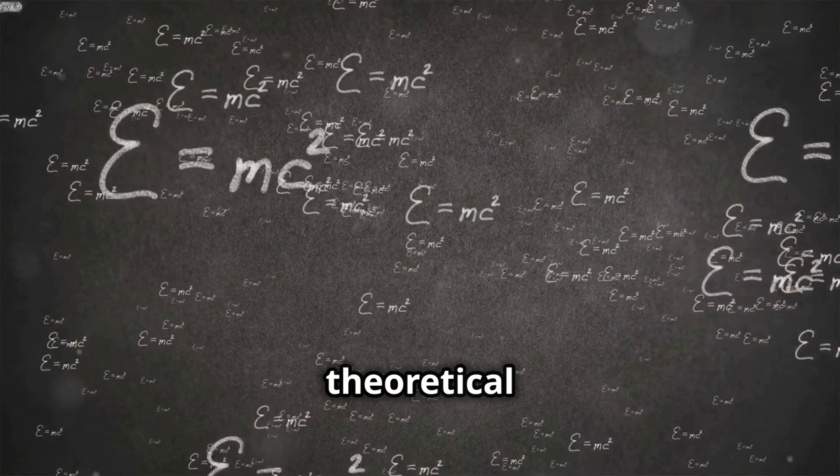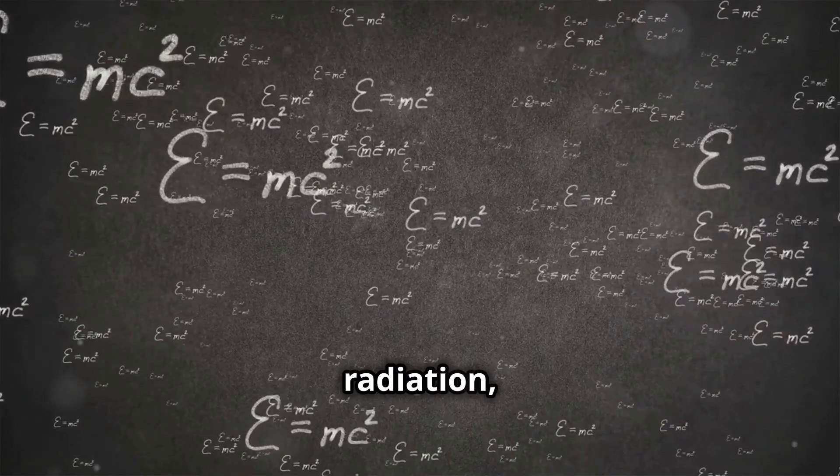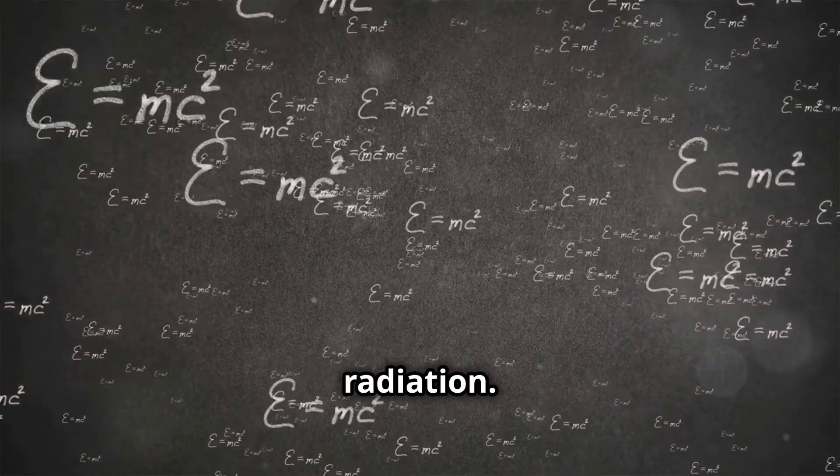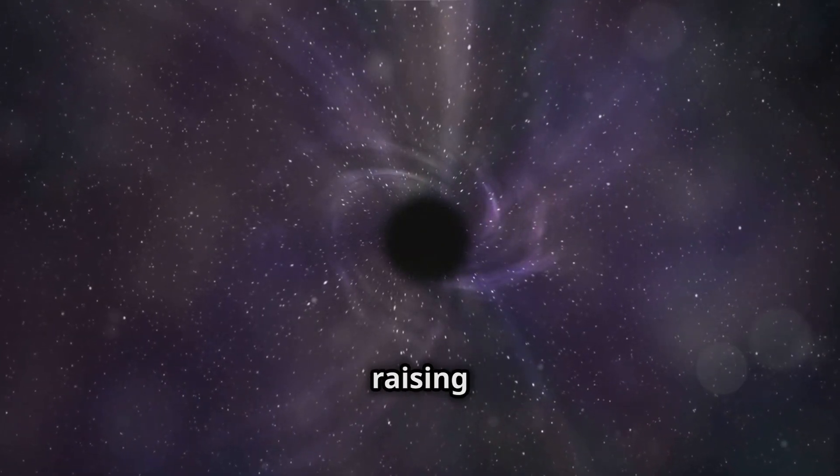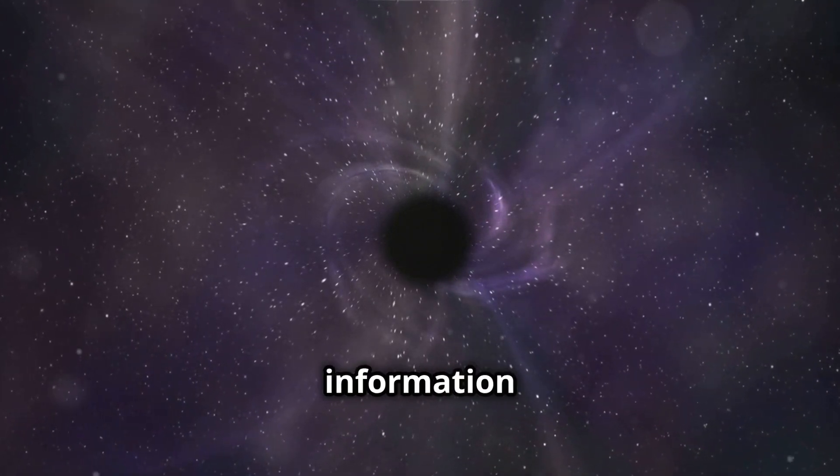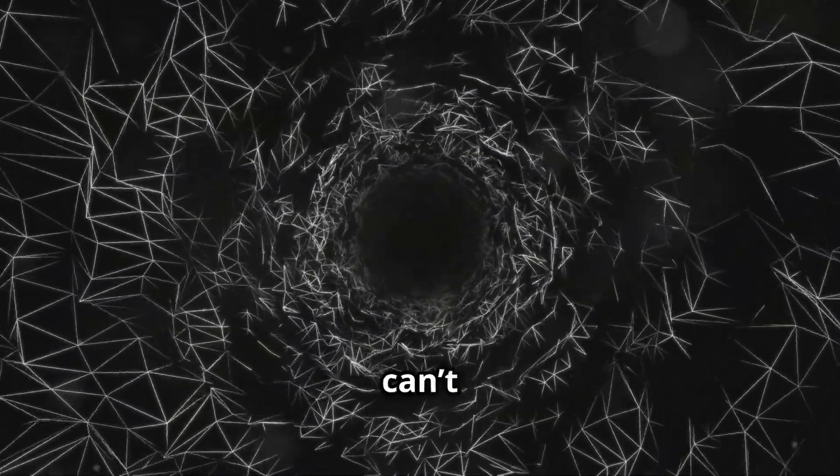In the 1970s, theoretical physicist Stephen Hawking proposed that black holes emit radiation, now known as Hawking radiation. This implies that black holes could eventually evaporate, raising the question, where does all the information go? According to the laws of physics, information can't just disappear.